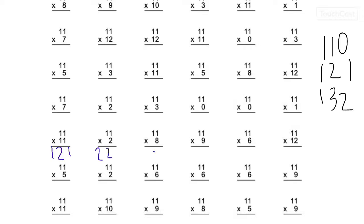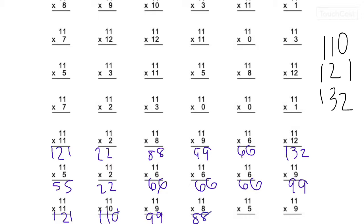132. 11 times 7, 77. 11 times 2, 22. 11 times 3, 33. 0, 0, 11 times 1, 11. Almost done. 121, 121. 11 times 2, 22. 11 times 8, 88. 11 times 9, 99. 11 times 6, 66. 132. 11 times 5, 55. 11 times 2, 22. 11 times 6, 66. 11 times 6, 66. 11 times 6, 66. 11 times 9, 99. 121. 11 times 10, 110. 11 times 9, 99. 11 times 8, 88. 11 times 5, 55. And 11 times 9, 99.